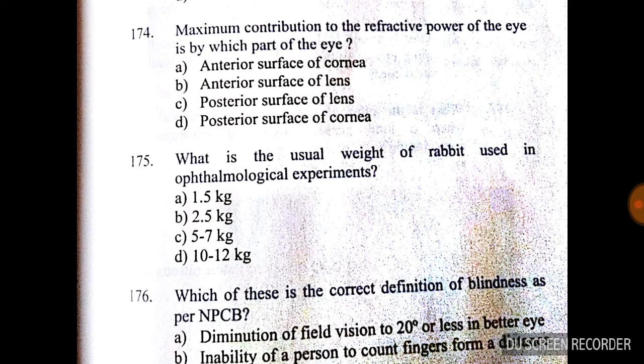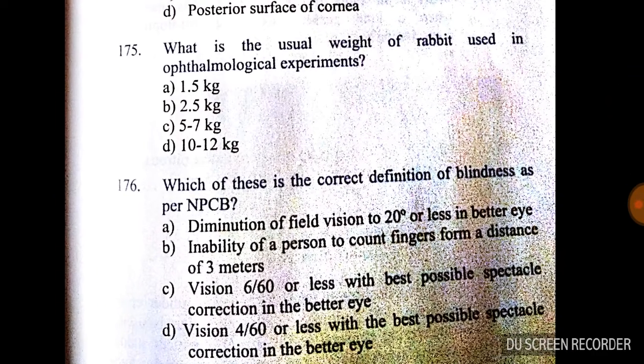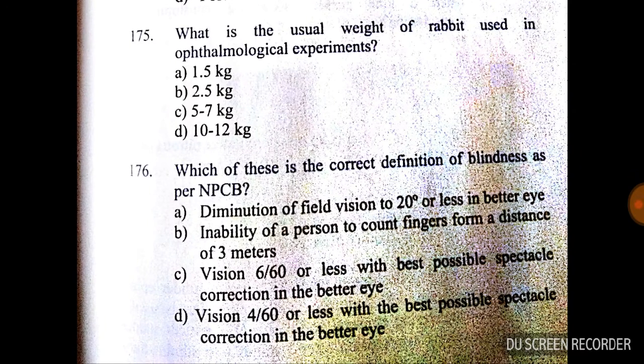Question number 174: maximum contribution of the refractive power of the eye is by which part? It is mainly by the anterior surface of the cornea. Question number 175: what is the usual weight of a rabbit used in ophthalmological experiments? The answer is option B — 2.5 kg.